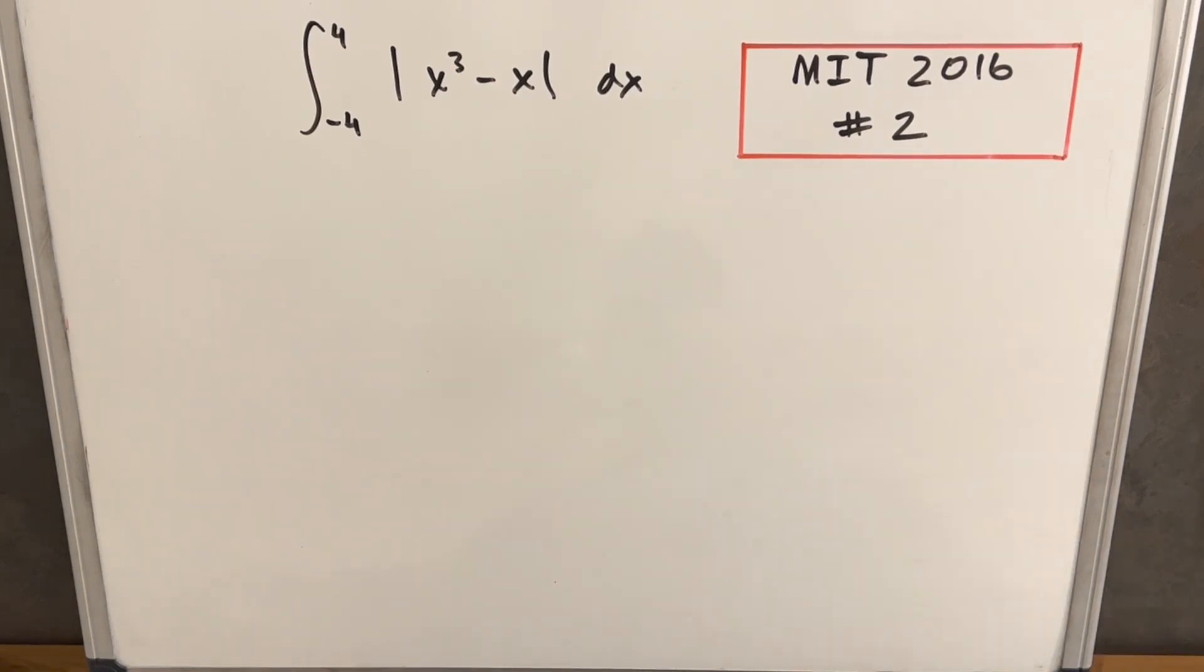Hey, we have here on the board an interesting integral from the MIT Integration Bee 2016, problem number two. We have the integral from negative four to four, the absolute value of x cubed minus x dx.